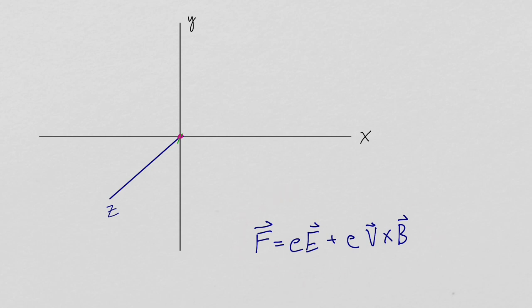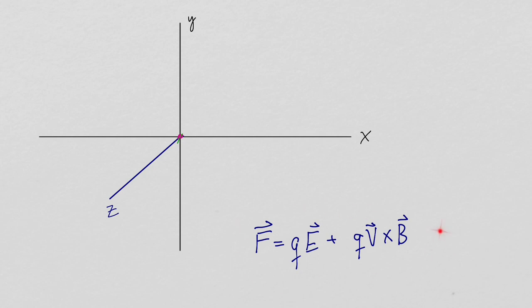Here I've written down the Lorentz force law. When I say the arena where our physics is taking place, this is essentially the physics we're talking about. There's going to be a charged particle located at the origin with charge Q. The force on a particle due to the electric field is Q times E. The force on a particle due to the magnetic field is Q times the velocity of the particle crossed with B. So this is what we're dealing with when we talk about force — this red dot here is our particle.